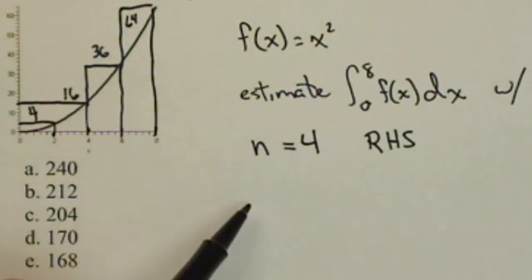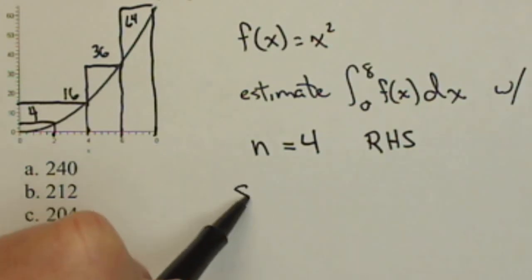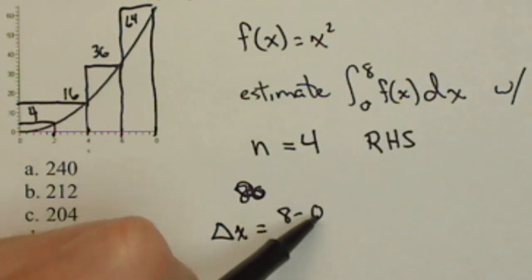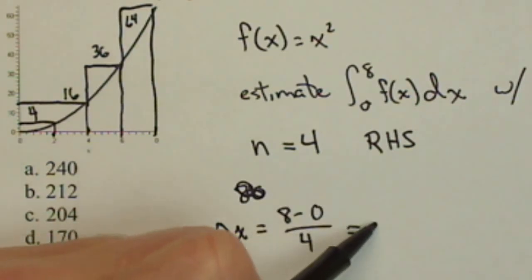Now, remember we also need our delta x, which is 8 minus 0 over 4, or 2.